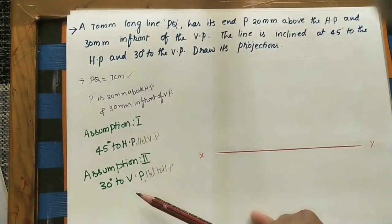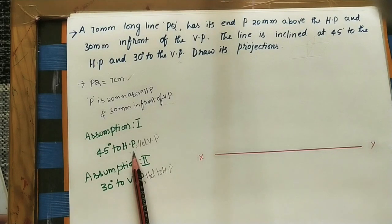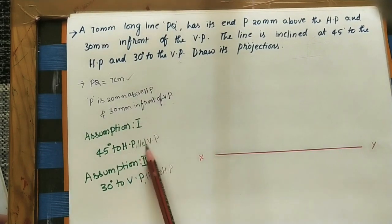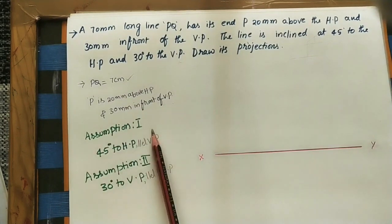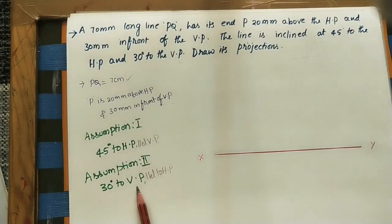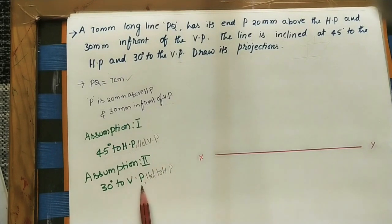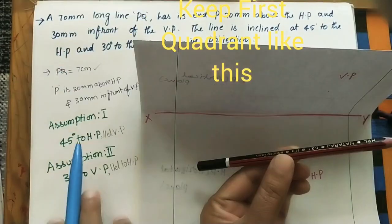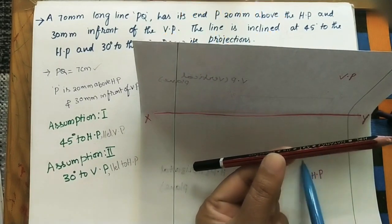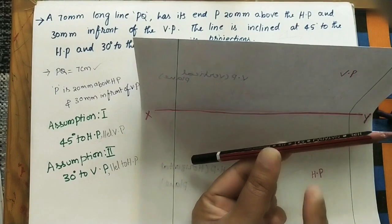Since two angles are given, we make two assumptions. Initially, take the angle with HP — 45 degrees — and assume the line is parallel to VP (zero degrees to VP). In the second assumption, take 30 degrees to VP and assume it is parallel to HP. For the first assumption: the line makes 45 degrees with HP and is parallel to VP, so the distance between the VP and the line is constant.